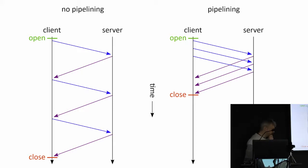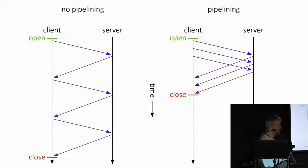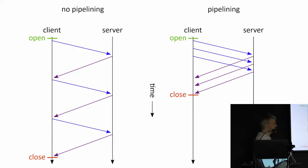One of the problems with pipelining is that if the server can't respond to each request equally fast, you end up in a situation where it may spend a lot of time wanting to answer the first request, and the rest of the requests have no way of being responded to — even though the server has the response ready — because the protocol requires you to send the first response before you send the next one.